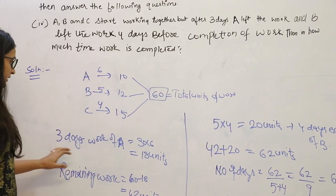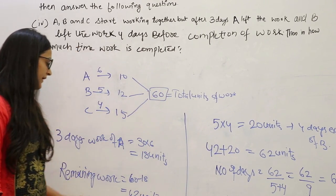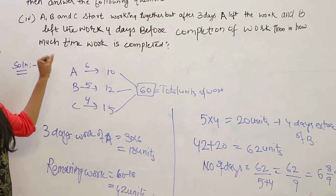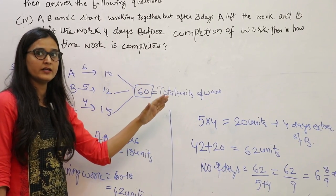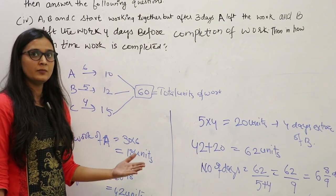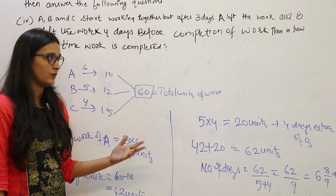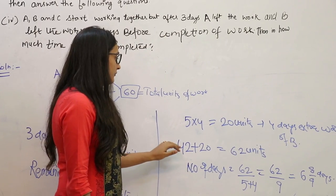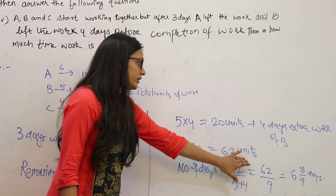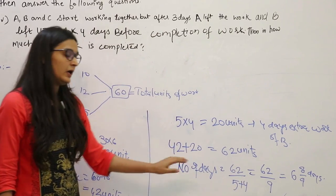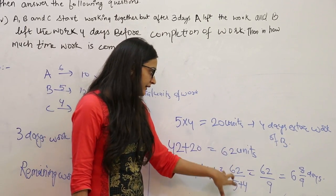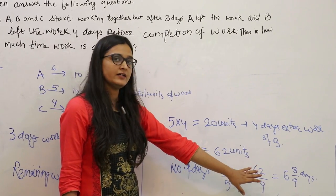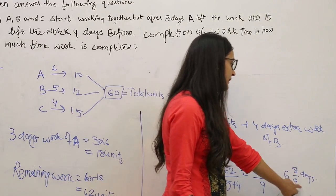Now subtract these 18 units from the 60 total units — we get the remaining work of 42 units. B left the work 4 days before the completion, so we assume B worked extra for 4 days. This extra work of B is added to the remaining 42 units, coming out to 62 units. Divide 62 units by the combined efficiency of B and C. That gives you 6 and 8/9 days in which the work is completed.